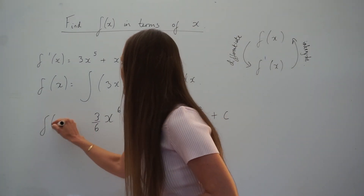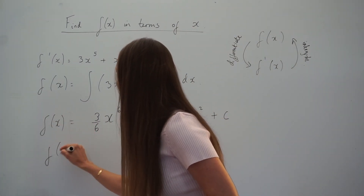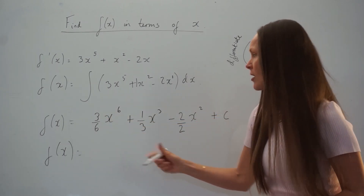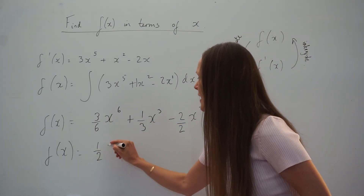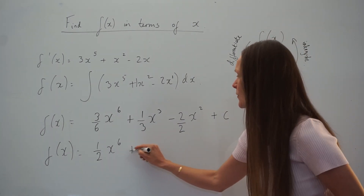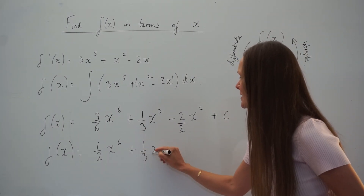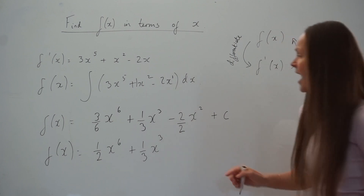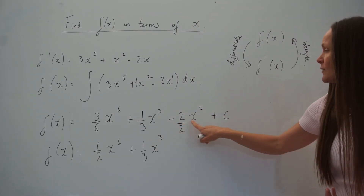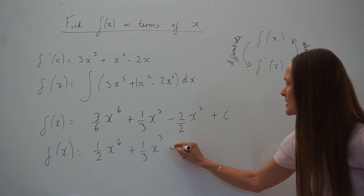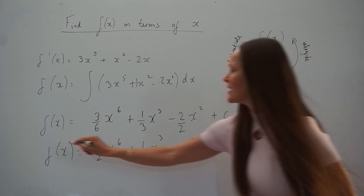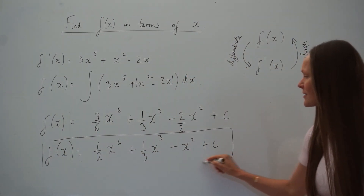The final step is to simplify. 3 divided by 6 is a half, so we have a half x to the power of 6. A third doesn't simplify, so we leave it as a third x cubed. Negative 2 divided by 2 is negative 1, so negative 1x squared is the same as negative x squared, plus c. And that is f of x in terms of x.